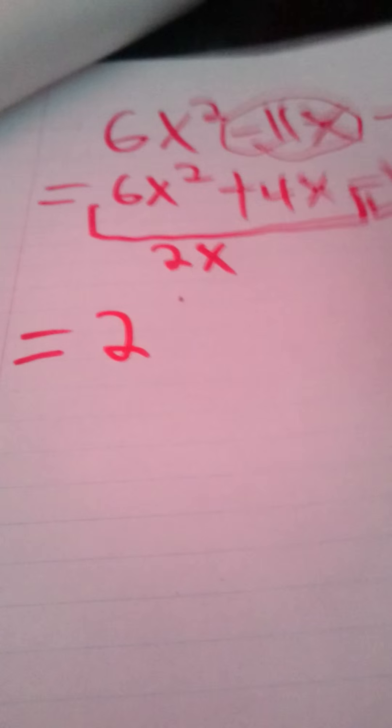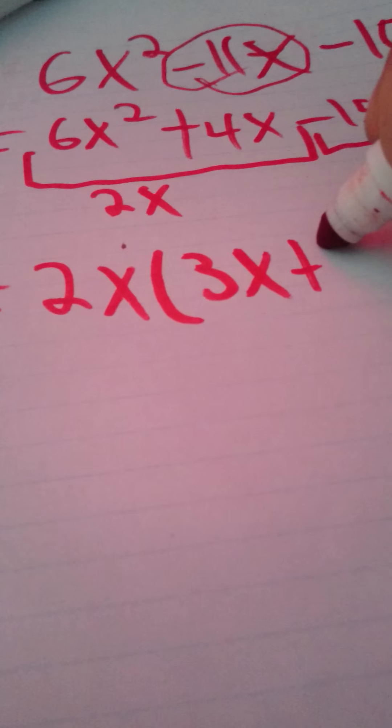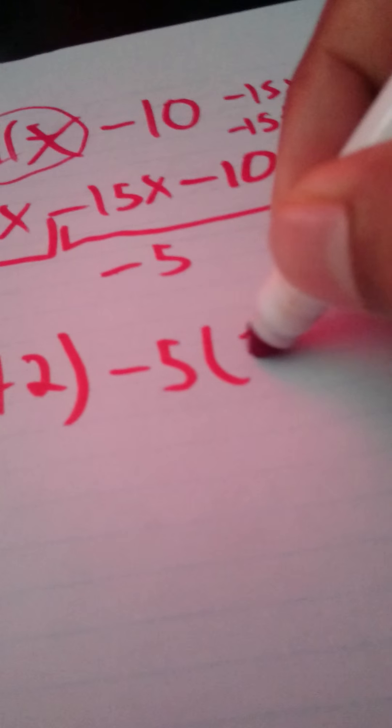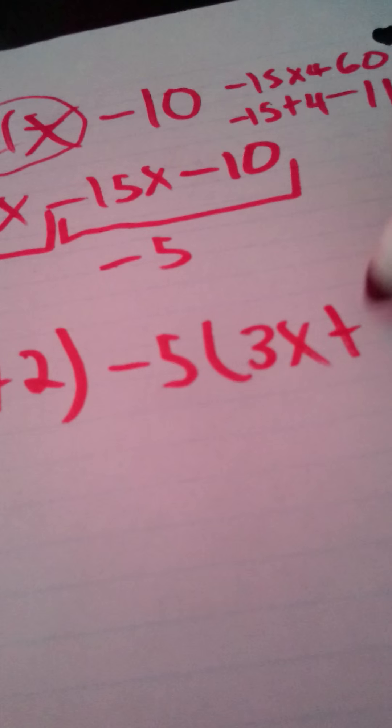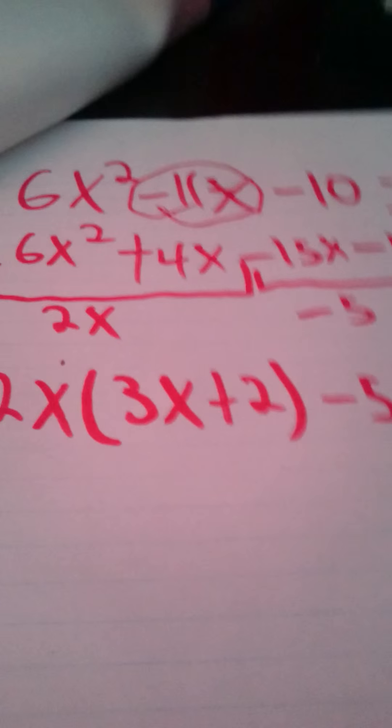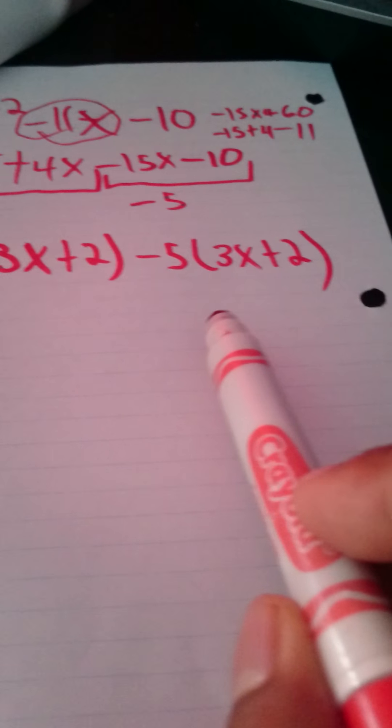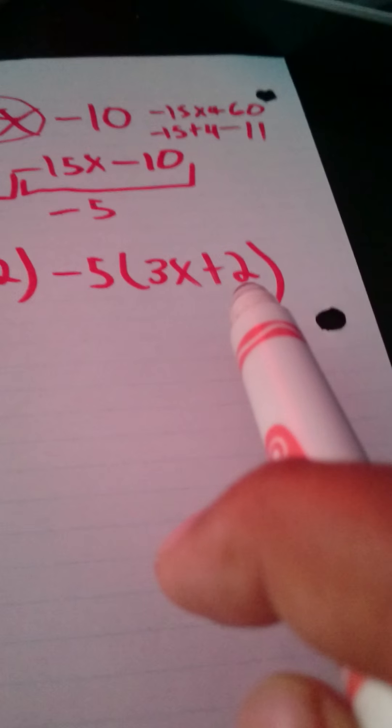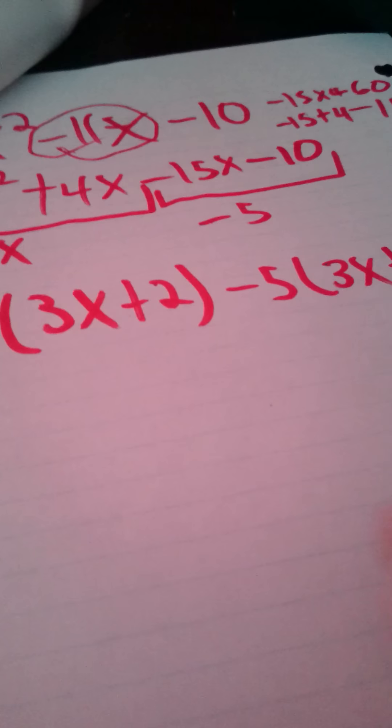Next, what you're going to do is put these two outside of their own brackets. You'll have 2x bracket 3x plus 2, and negative 5 bracket 3x plus 2. It works out great that you have 3x plus 2 in both of the brackets here.